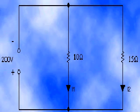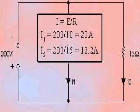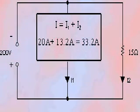Let's now look at an example. In the circuit diagram shown, what are the values of the branch currents and the total current? The branch currents can be determined as follows. Using I equals E divided by R, I1 equals 200 divided by 10, or 20 amps, and I2 equals 200 divided by 15, or 13.2 amps. Since the total current is the sum of the individual branch currents, the total current IT equals I1 plus I2, or 20 plus 13.2, which equals 33.2 amps.